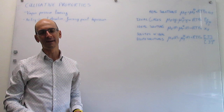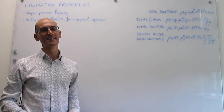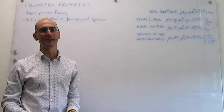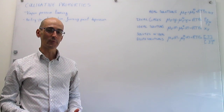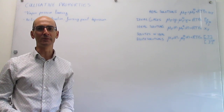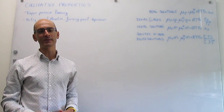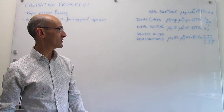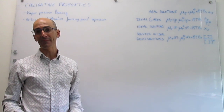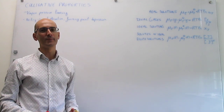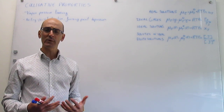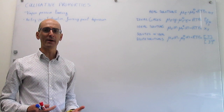In this video we define the concept of colligative properties and see a few examples of what colligative properties are. In the last few videos we have been working really hard to derive how the chemical potential of components in a mixture change when you change the concentration, and that's this full list that we have right here. So it's time now to try to see some applications of that really hard theoretical work. What we do now is learn about colligative properties.